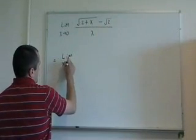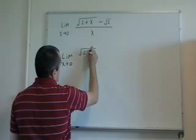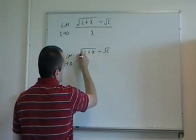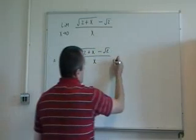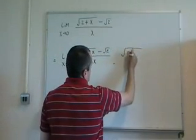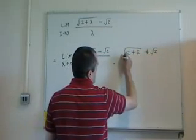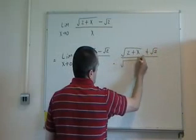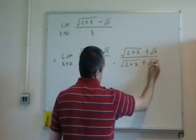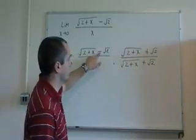So we get the limit as x goes to 0 of the square root of 2 plus x minus the square root of 2 over x, times the square root of 2 plus x plus root 2, divided by the square root of 2 plus x plus root 2. So here's the conjugate — this is a plus, this is a minus.